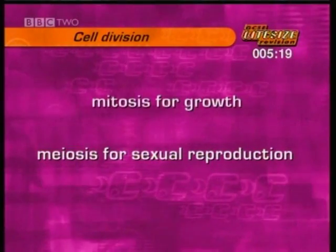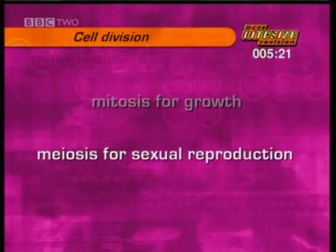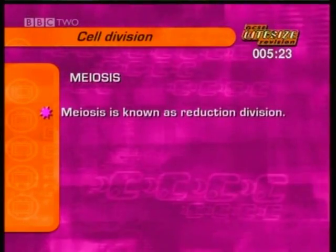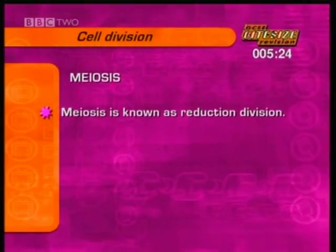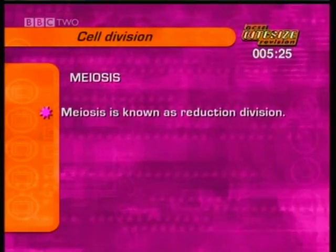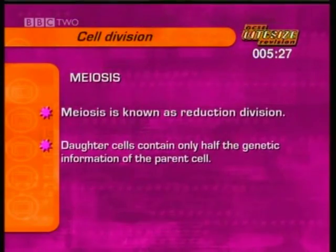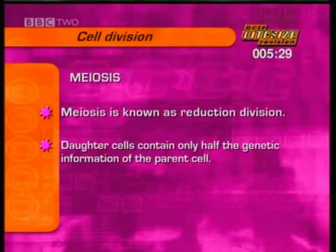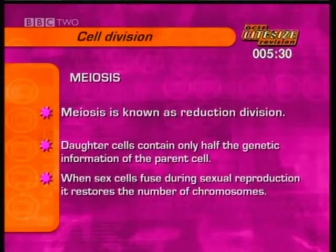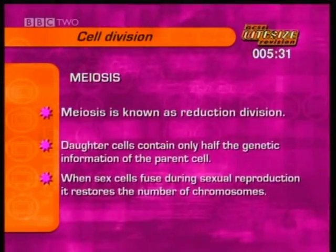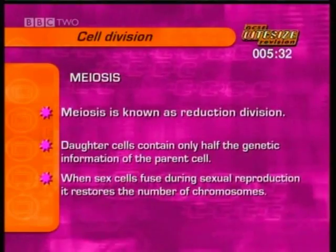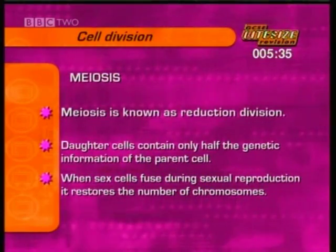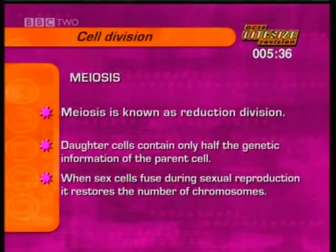Next, meiosis. Meiosis is also known as reduction division because the daughter cells contain only half the genetic information of the parent cell. This is important because when sex cells fuse during sexual reproduction, that restores the number of chromosomes.